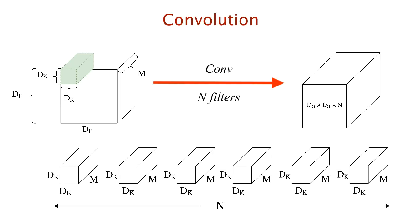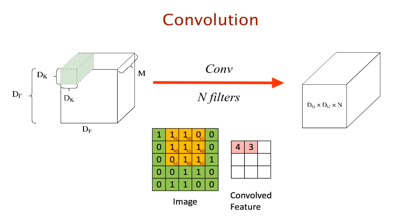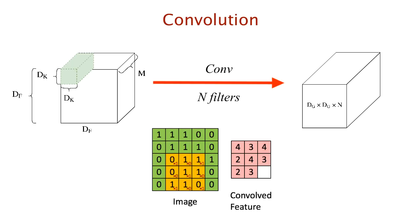If we apply n such kernels on the input, then we get an output volume g of shape dg × dg × n. A convolution operation takes the sum of products of the input and the kernel to return a scalar. This operation continues by sliding the kernel over the input. I've explained this in detail in my video on convolutional neural networks — check that out for a clearer understanding. I'm more concerned now with the cost of this convolution operation.